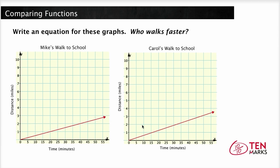So the strategy we'll use is by first examining these graphs which show how fast Mike and Carol walk to school. Use each graph to come up with an equation for the function represented. Then find the rate of change for each and compare.